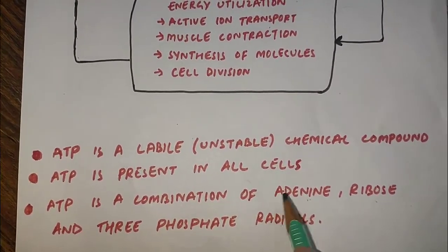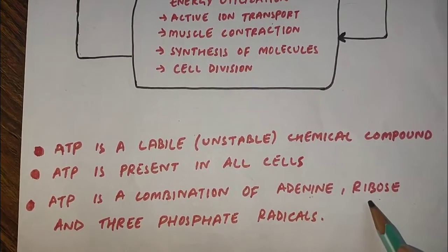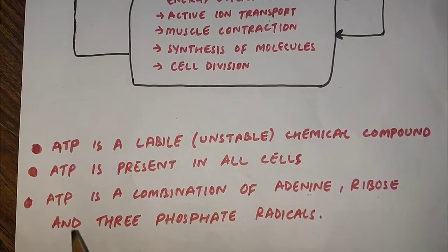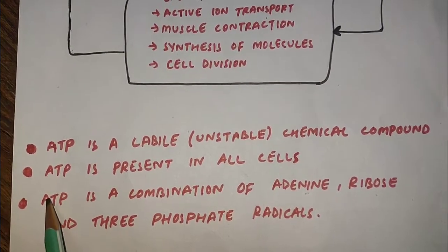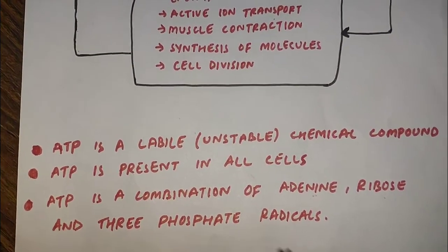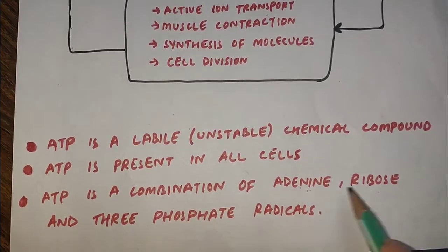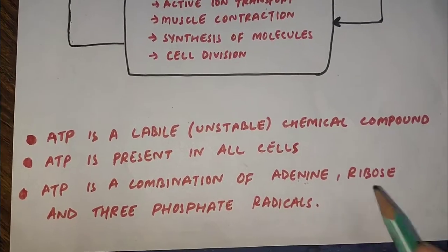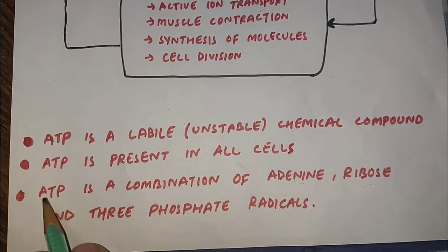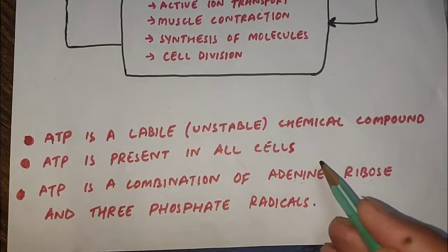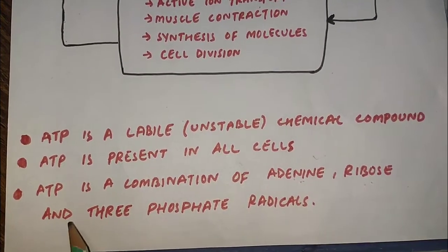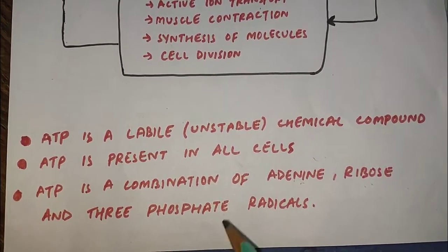ATP is a combination of adenine, ribose, and three phosphate radicals. Adenosine means adenine plus ribose, and triphosphate means three phosphate radicals.